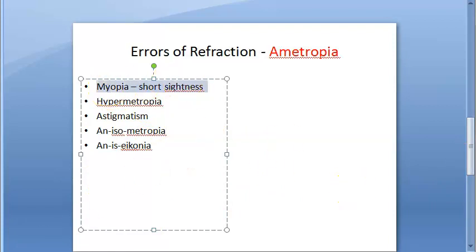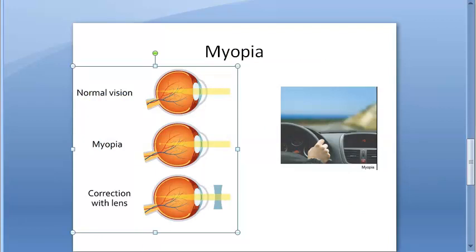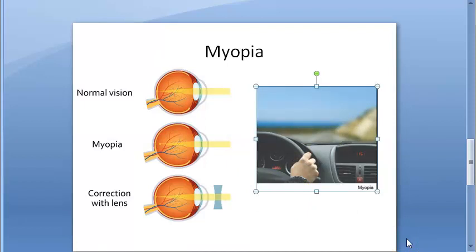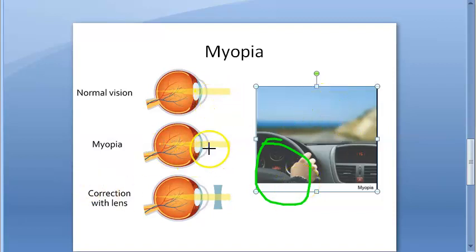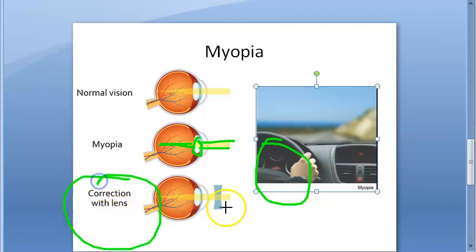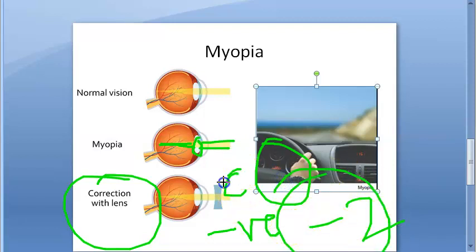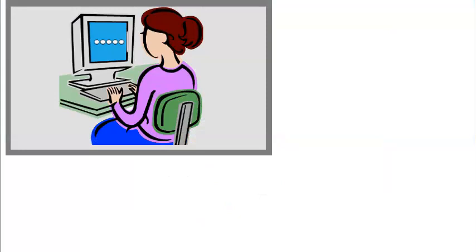First, understand what myopia is — short-sightedness. With myopia, you have to wear specs to see far. Short-sightedness means whatever is near you can see, but whatever is far you cannot see. Here, the parallel beam coming in is focusing in front of the retina when accommodation is at rest. Correction is with a concave lens, minus power — for example, minus 2 — to see far.